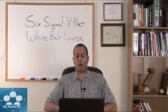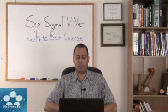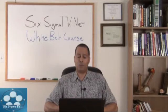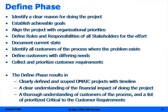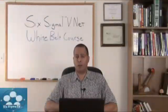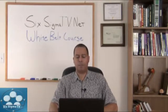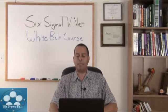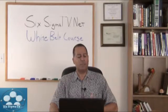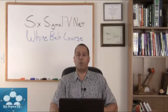Collect and prioritize those customer requirements. In this phase you want to have a clearly defined, scoped DMAIC project with a timeline. Have a clear understanding of the financial impacts — you want hard savings out of these projects that hit the bottom line. Soft savings are possible too, but hard savings are the focus. You also want a thorough understanding of the customers and a list of prioritized critical-to-customer requirements, or VOC — voice of the customer.